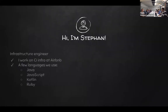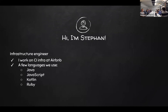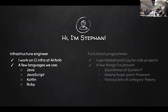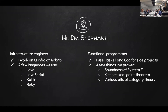A little bit about me: I work at Airbnb on infrastructure for CI. Airbnb does not do a lot of functional programming, sadly — it's a hodgepodge of mostly object-oriented languages like Java and Ruby. But I am a functional programmer, and I need to get my fix. For my side projects I use Haskell and Coq — Coq for proving theorems and Haskell for writing programs.